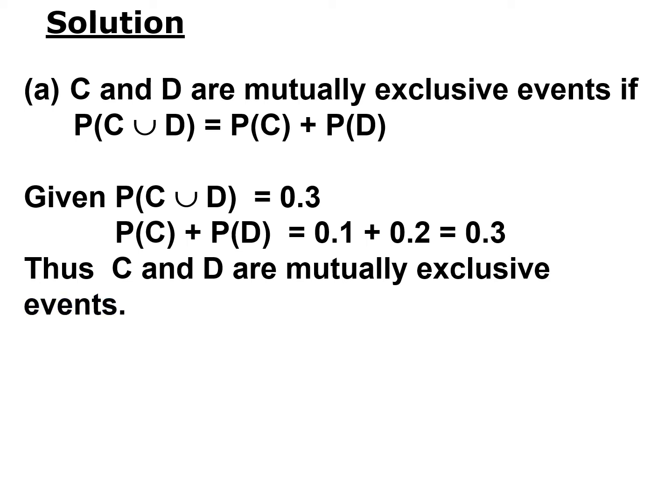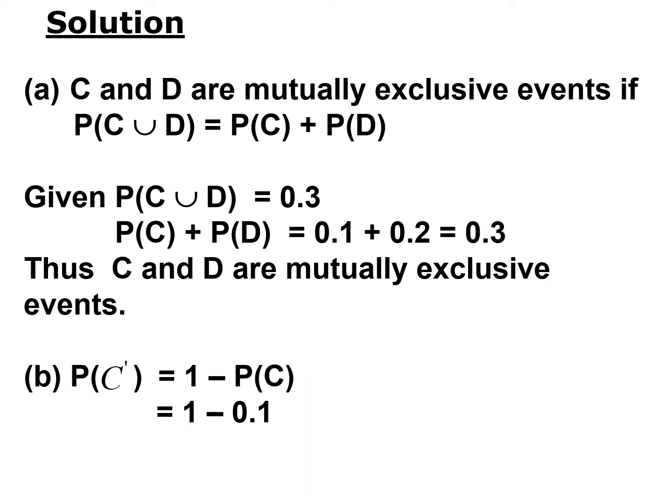For the second part, we want to find P(C'). P(C') is the complement of P(C), so it equals 1 minus P(C). Since P(C) is 0.1, as given in the question, we get 1 minus 0.1, which gives us 0.9.